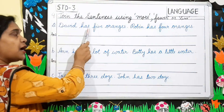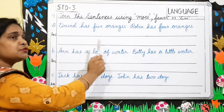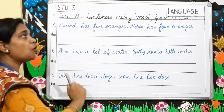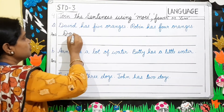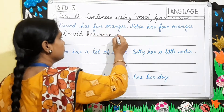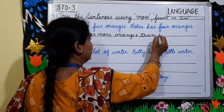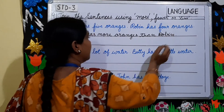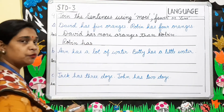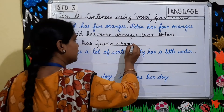Number A: David has five oranges. Robin has four oranges. David has more oranges, Robin has only four. So you will write: David has more oranges than Robin. And for Robin, you can count oranges, so you will write 'fewer': Robin has fewer oranges than David.